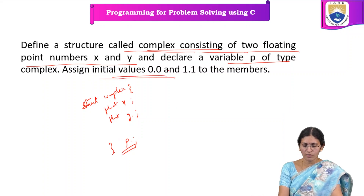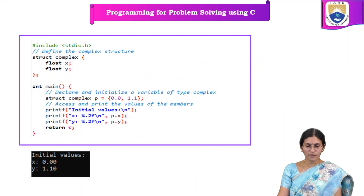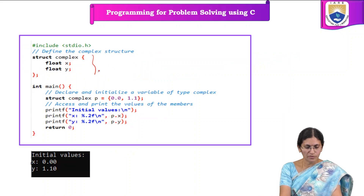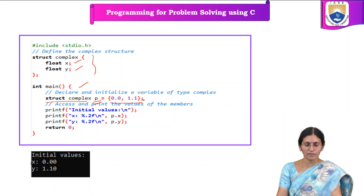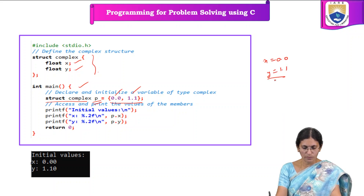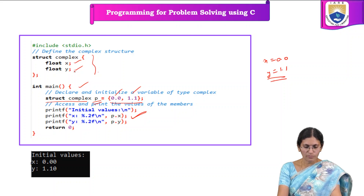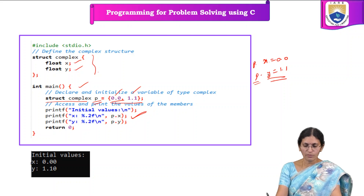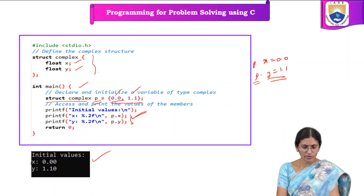After that, we have to assign the values — x is 0.0 and y is 1.1 — to the members. It is a very simple program. We define the structure first, declare the float members inside, and then inside the main function, declare a variable of type struct complex. Here itself we initialize the values: x equals 0.0 and y equals 1.1. We then print the values using printf — p dot x is 0.0 and p dot y is 1.1. When we execute this program, the output will be: x value is 0.0 and y value is 1.10.